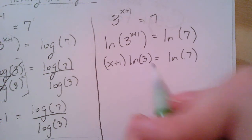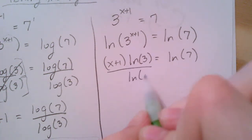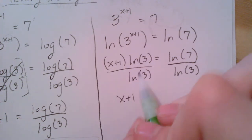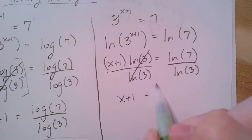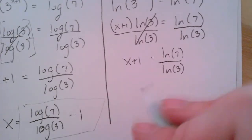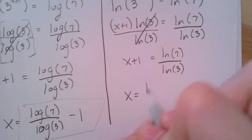Natural log of 3^(x+1) equals natural log of seven. Natural log of 3 is just a number. So I can divide by natural log of three. Or ln of 3, you might hear that in multiple different ways. Those cancel, and I'm left with ln(7) over natural log of 3. Again, I'm going to subtract one to the other side to finish solving. I get that x is equal to ln(7) over ln(3) minus one.